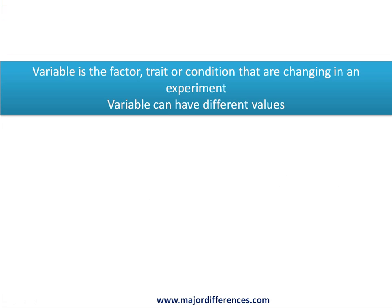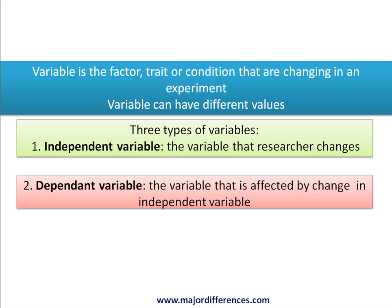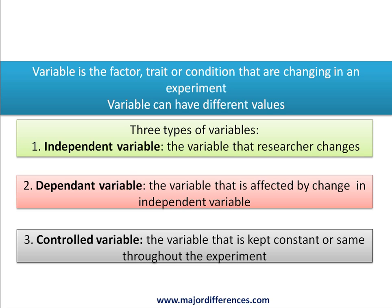Let's start with the definition. A variable is a factor, trait, or condition that is changing in an experiment; it can have different values. In an experiment there are three types of variables: first is the independent variable — the variable that the researcher changes; second is the dependent variable — the variable that is affected by the change in the independent variable; and third is the controlled variable — a variable that is kept constant throughout the experiment.